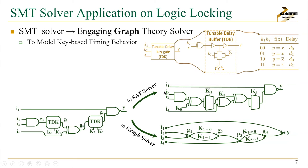Regarding the graph theory solver: assuming a circuit is obfuscated using two-valued delay gates that obfuscate both timing and function, the SMT solver provides two solvers. On one side, we have the SAT solver for Boolean representation. On the other side, we have a graph theory resolver providing a graph representation of the circuit modeling timing behavior — for example, using the weight of edges as the normalized delay of paths or gates in the obfuscated circuit. With these two models, we can target and break delay-based logic locking.